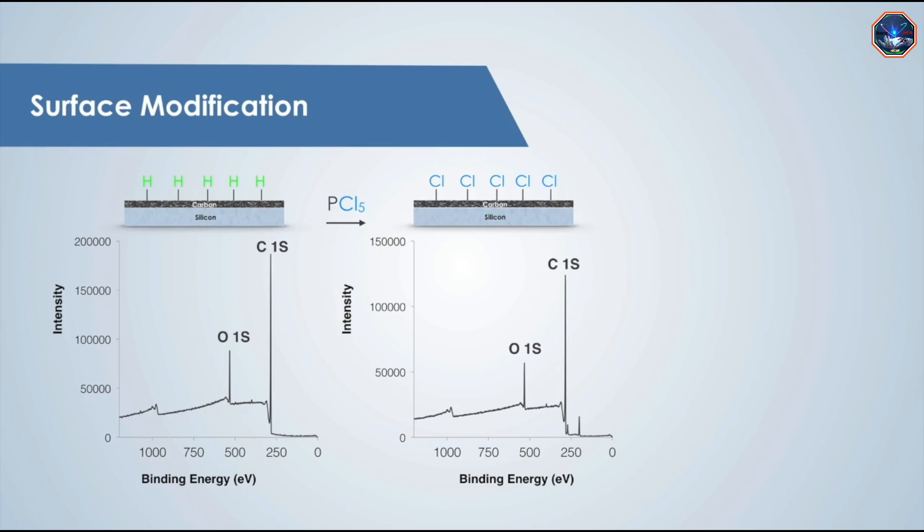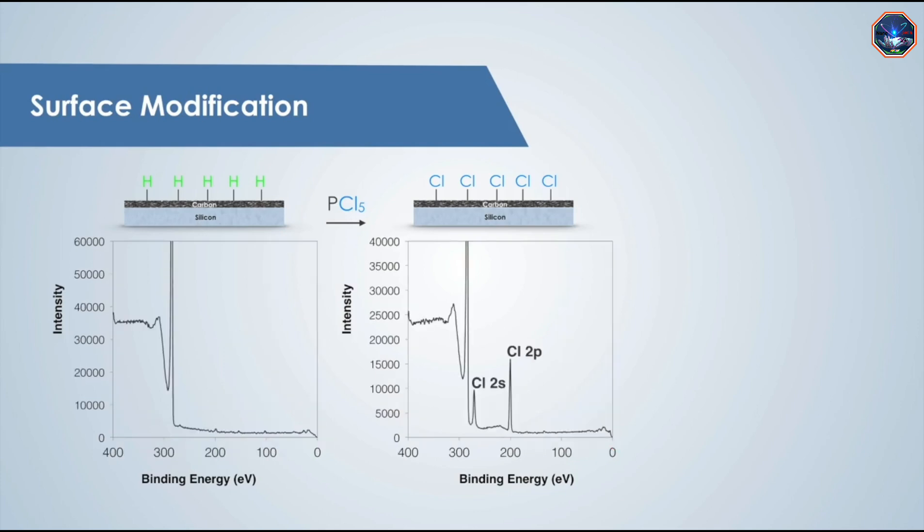After this surface has been reacted with the phosphorus pentachloride, two new peaks appear. If we take a closer look at this region of the spectrum, we can see that the two new peaks are energies consistent with the addition of chlorine to the surface.